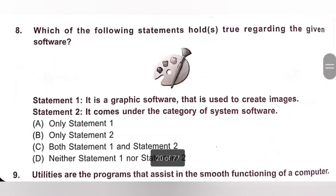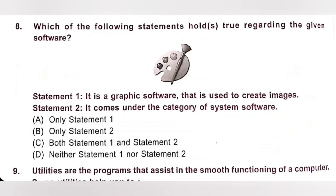Eighth. Which of the following statements hold true regarding the given software? Statement 1: It is a graphic software used to create images. Statement 2: It comes under the category of system software. Options: A. Only statement 1, B. Only statement 2, C. Both, D. Neither. The given software is MS Paint. It comes under the category of application software, not system software. So only statement 1 is true. Option A is the correct answer.